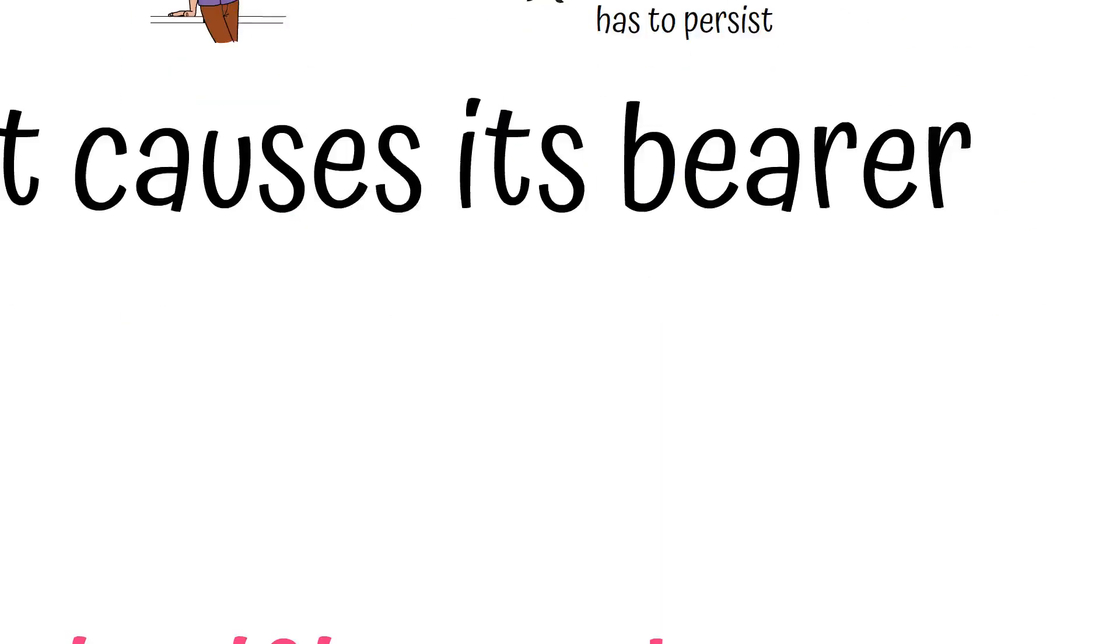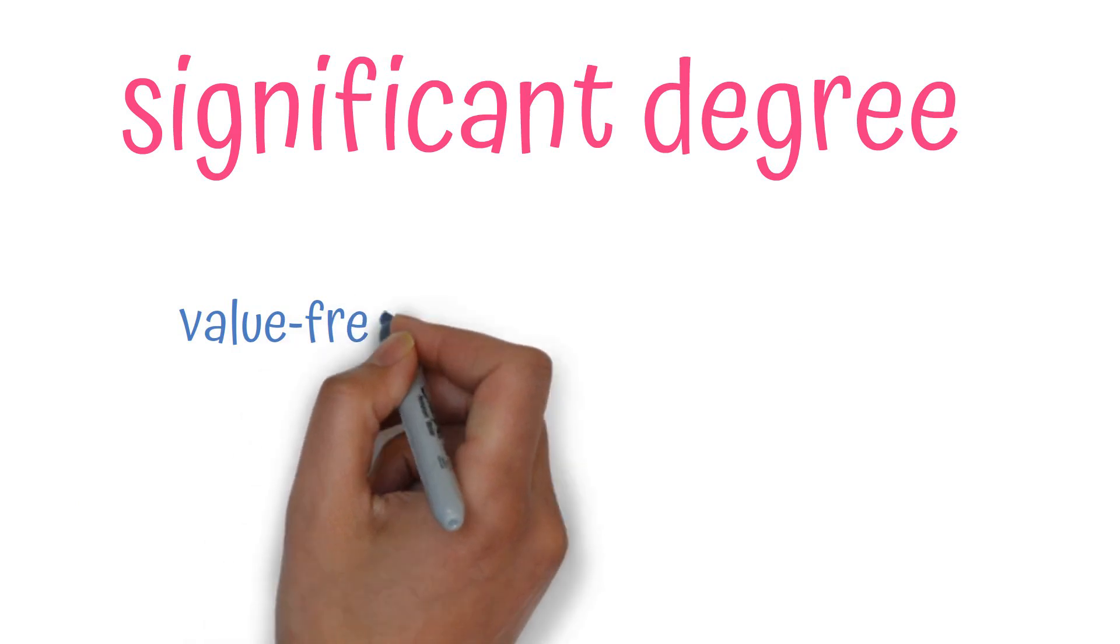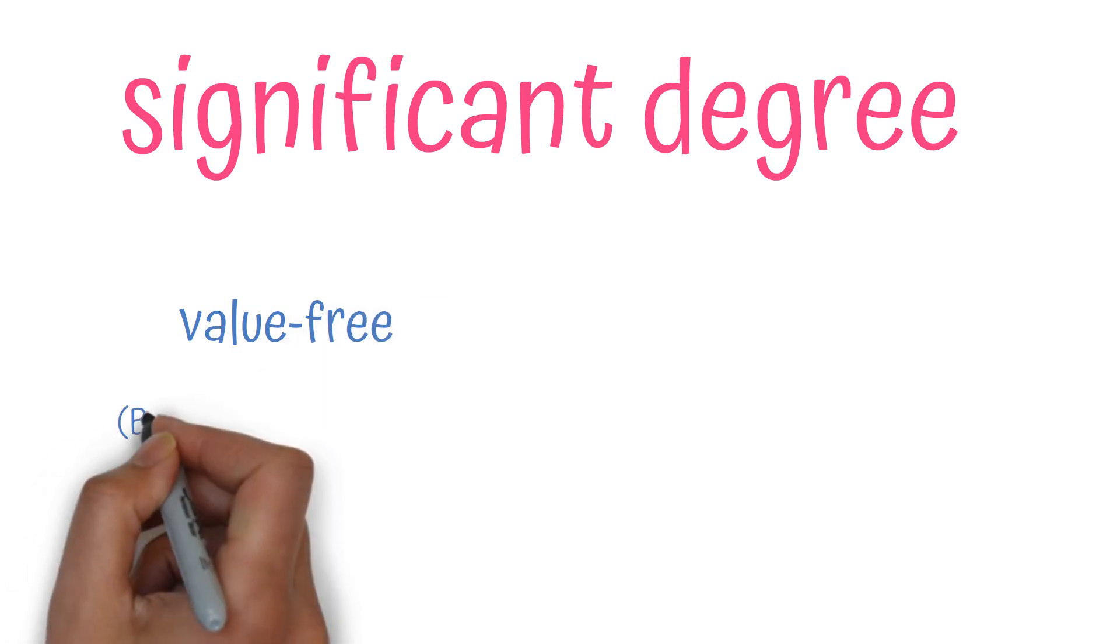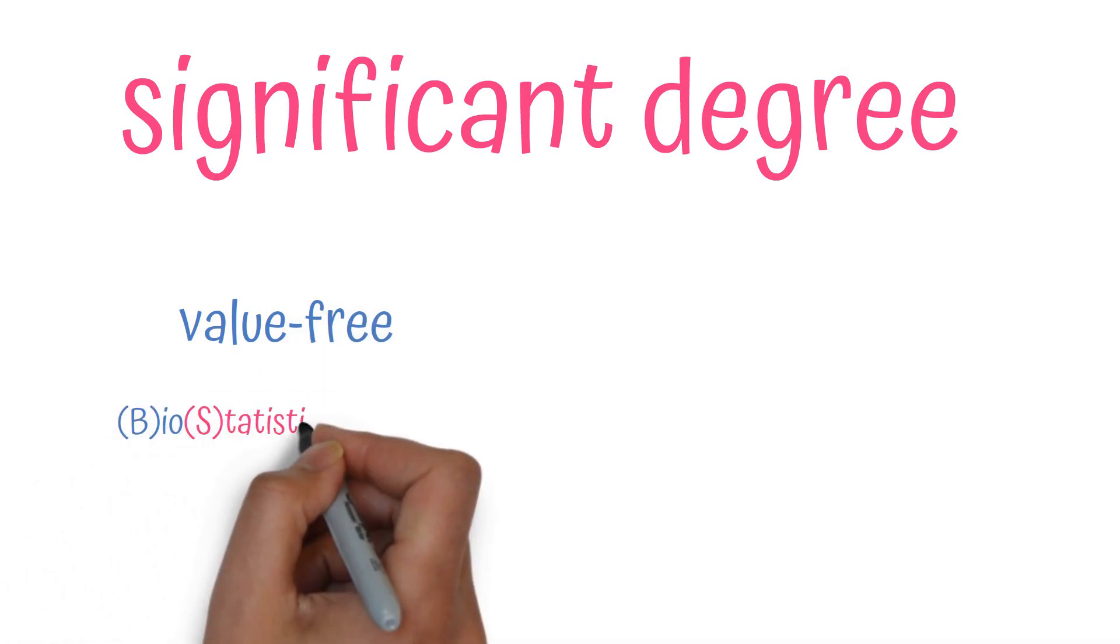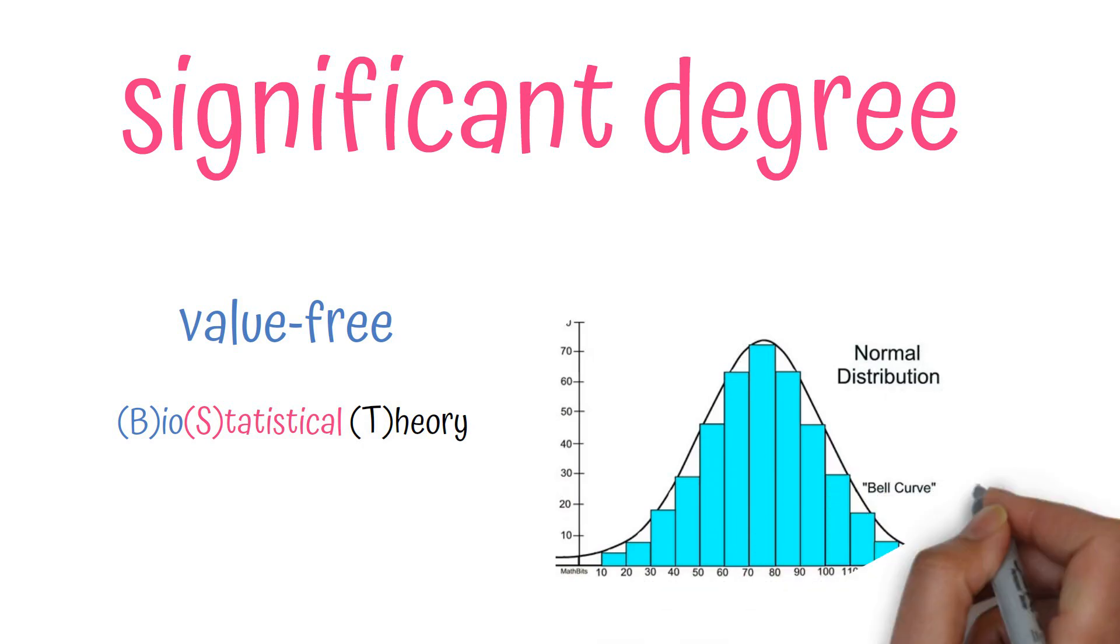A similar argument can be made about severity, though here again we can look to Boorse-Wakefield's model for some ostensibly value-free reassurance. Remember that the BST takes the average of function as its indicator of health. So when we say significant impairment, we could literally read it out by statistical function.